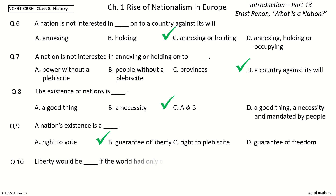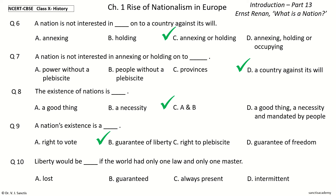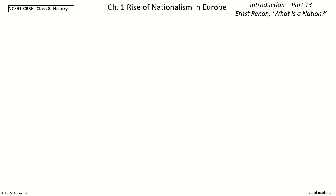Question 10. Liberty would be dash if the world had only one law and only one master. The options are: lost, guaranteed, always present, intermittent. And the answer is lost. So, liberty would be lost if the world had only one law and only one master.